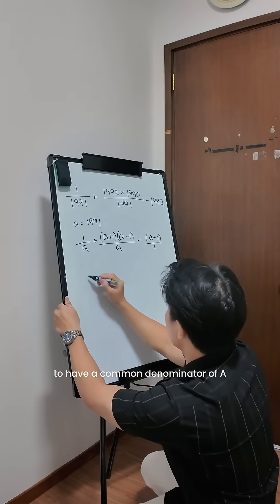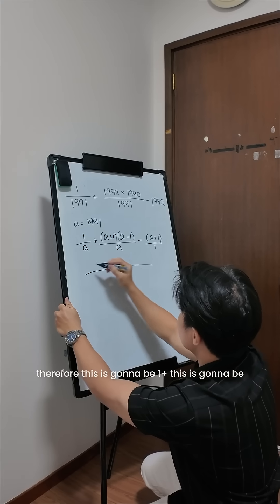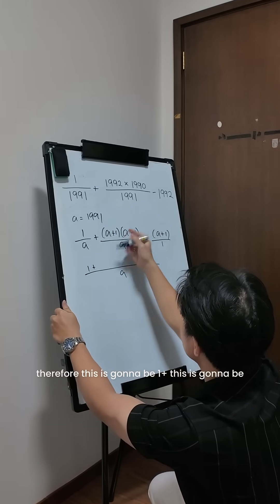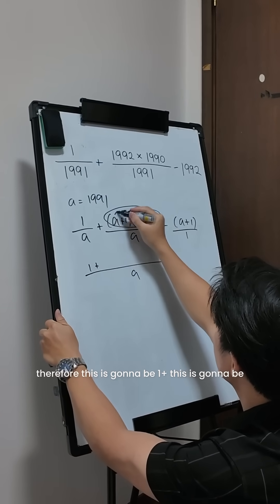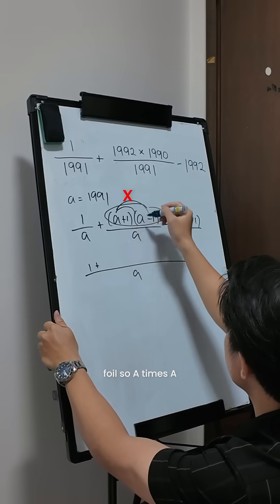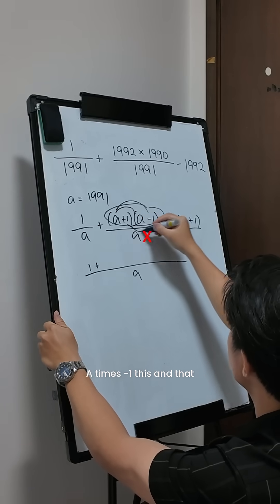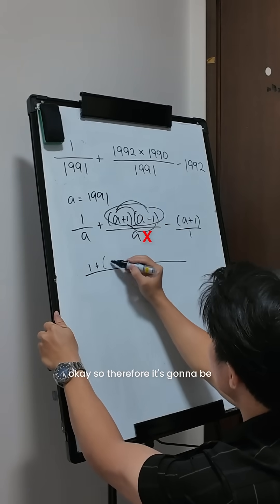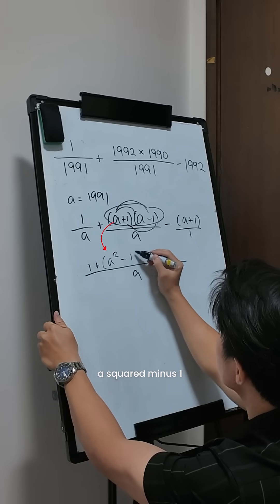Now, we can make everything to have a common denominator of a. Therefore, this is gonna be 1 plus this is gonna be a foil. So, a times a, a times negative 1, this and that. Okay, so therefore, it's gonna be a squared minus 1.